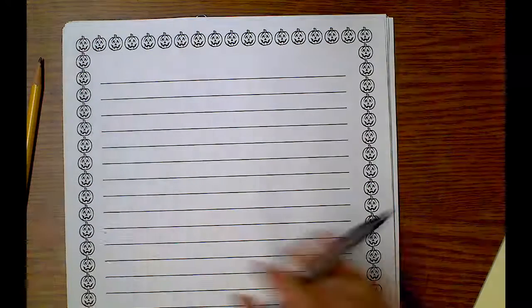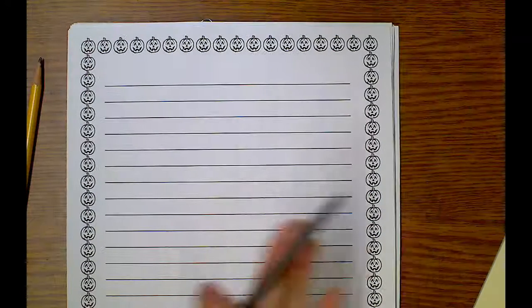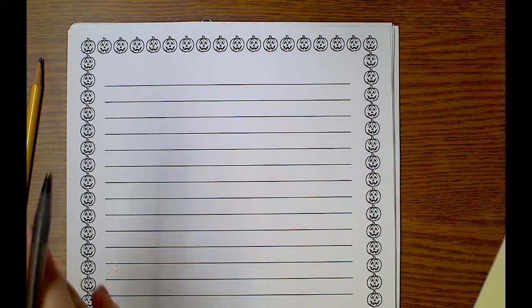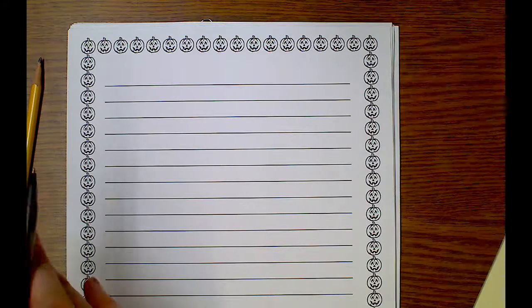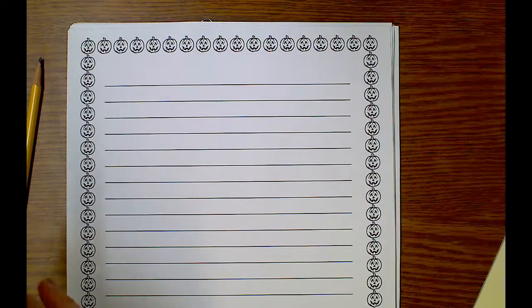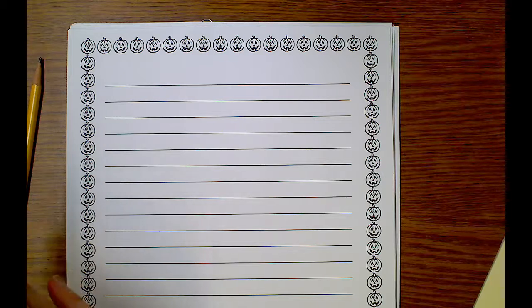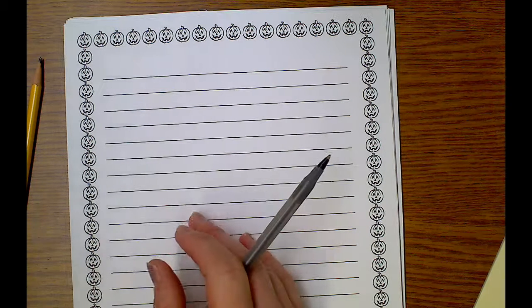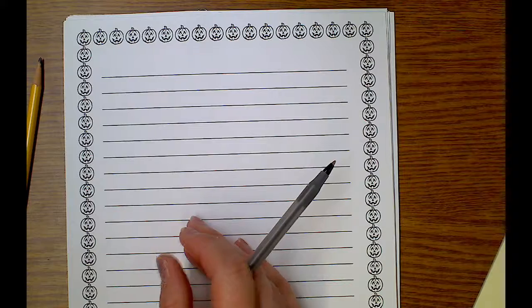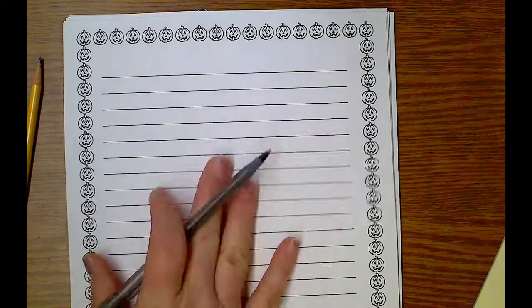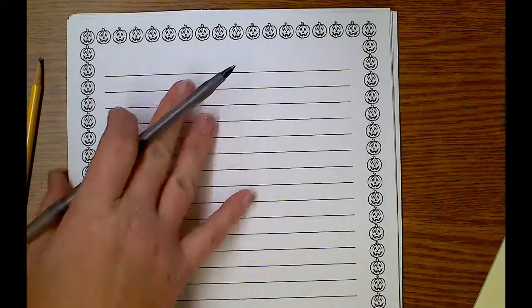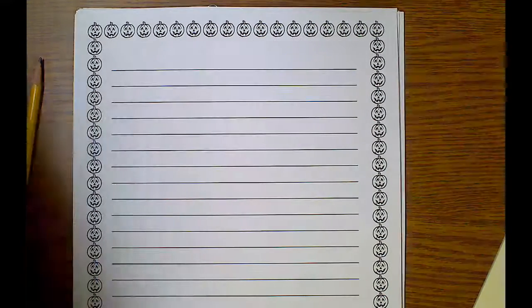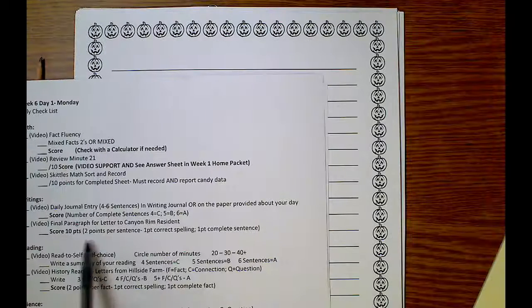All right, so we've been writing letters to our Canyon Rim resident, and in week five I added about—I wrote a paragraph about who I was, I wrote a paragraph about school, I wrote a paragraph about hobbies, and now I'm going to write a paragraph. My final paragraph is about...